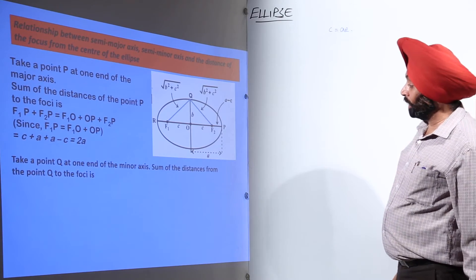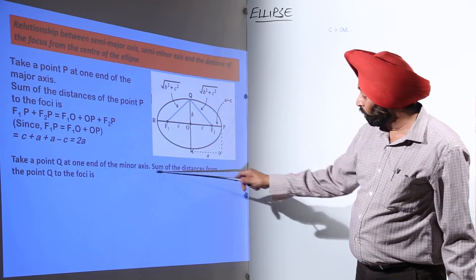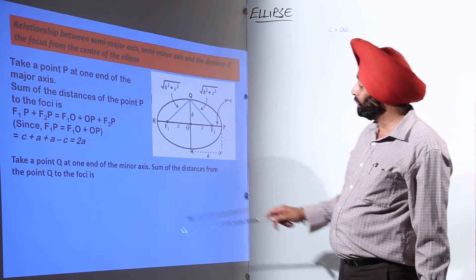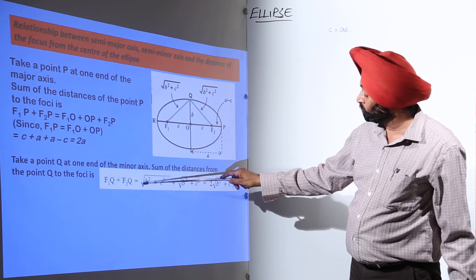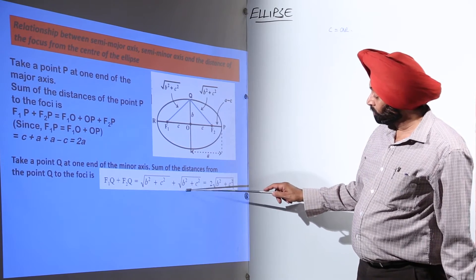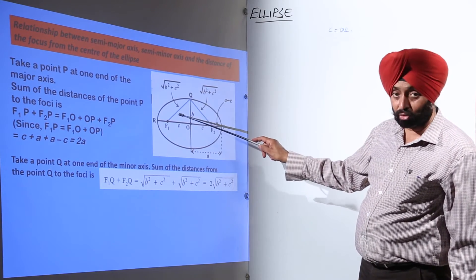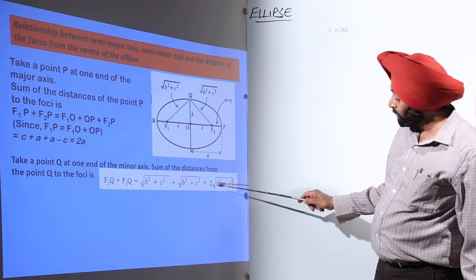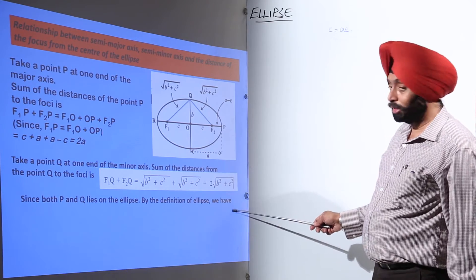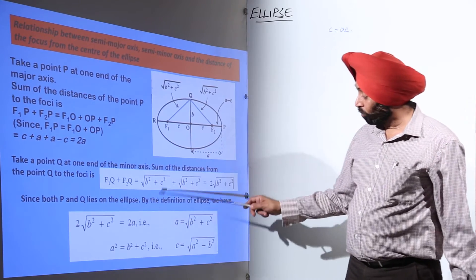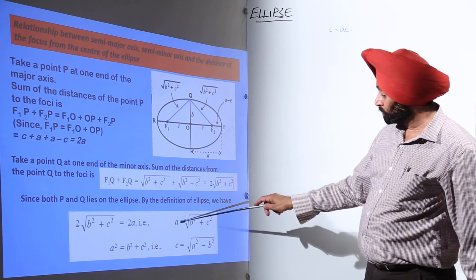Now take a point Q at one end of the minor axis. The sum of the distances from point Q to the foci is F1Q plus F2Q, which equals the square root of B squared plus C squared plus the square root of B squared plus C squared. Now since both P and Q lie on the ellipse, by the definition of the ellipse, this sum is equal to 2A.